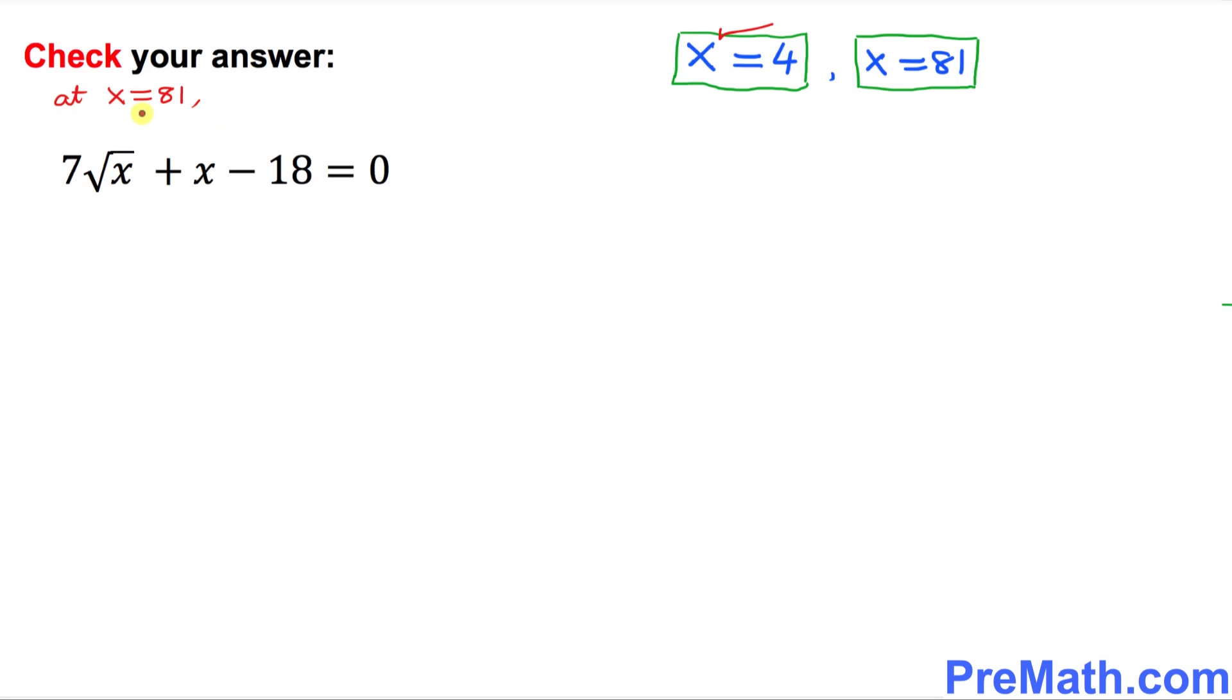Now we're going to check our answer at x equal to 81. Let's plug it in wherever you see x replace it by 81. So that is going to simply give us 7 times square root of 81 plus 81 minus 18 question mark. Is the left hand side equal to right hand side? We know the square root of 81 is 9. So 7 times 9 plus 81 minus 18. So that's going to become 63 plus 81 minus 18. If you add or subtract that is going to give you 126.